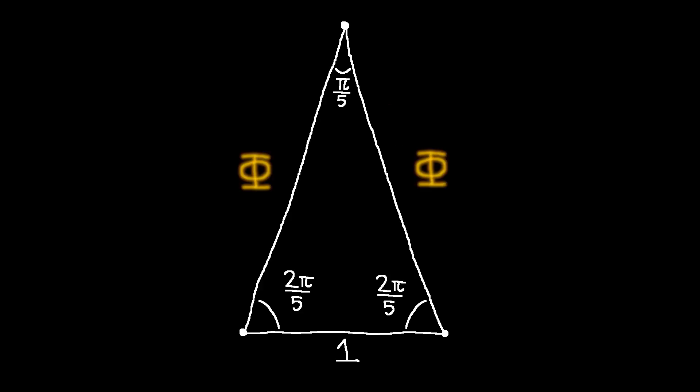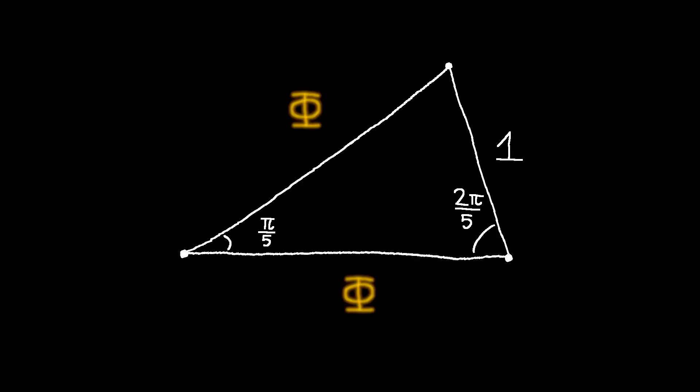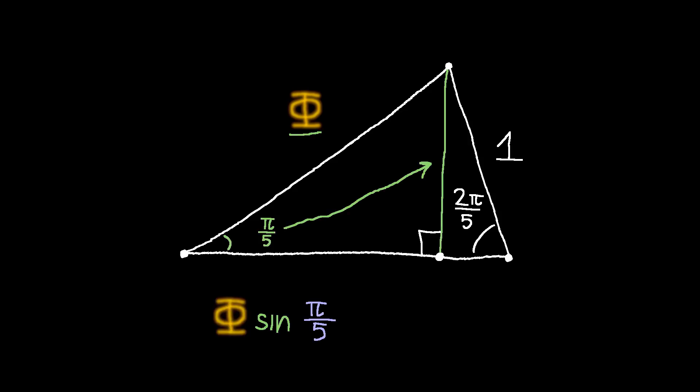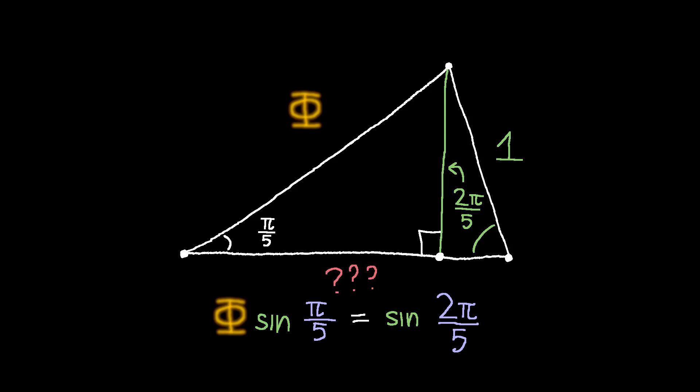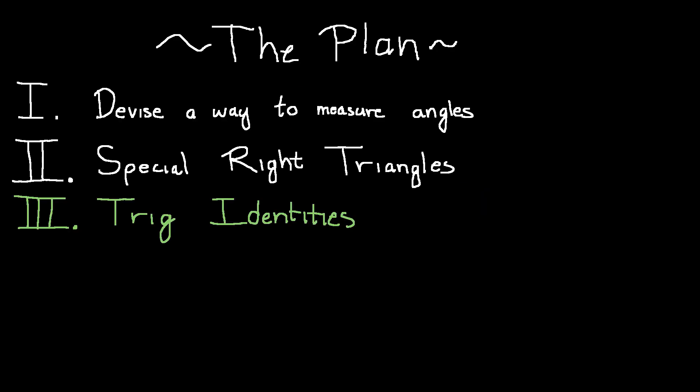Now we can finally work out sine π/5. Let's cut this isosceles triangle up to get two right triangles. From this setup, we notice that the golden ratio times sine π/5 is the same thing as sine of 2π/5, which means that — well, it looks like we're stuck. And now we have all the more reason to care about those trig identities. See you then.